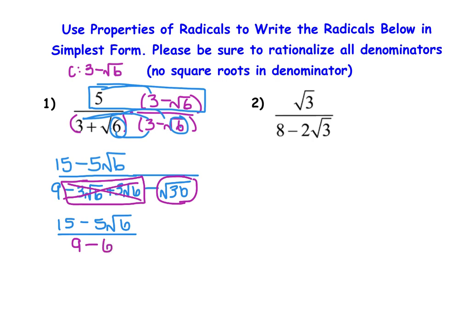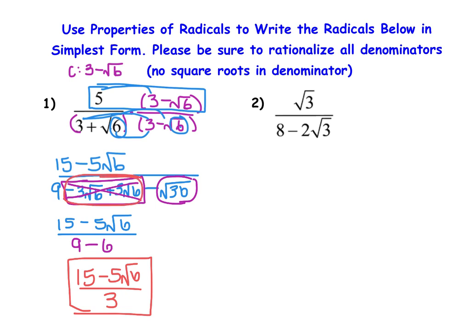The denominator simplifies to 3, giving us a final answer of 15 minus 5 square root of 6 over 3. By multiplying by the conjugate, the plus and minus terms cancel out, and the perfect square evaluates, so all square roots are gone from the denominator.